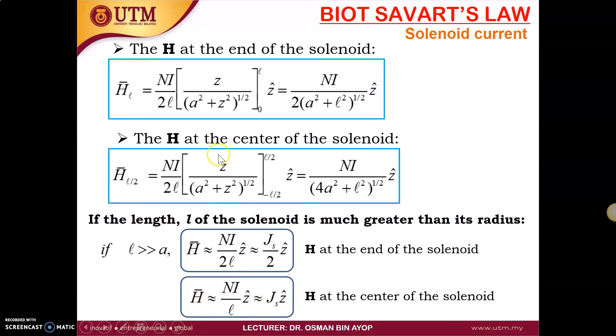At the center, H equal to Ni over l z, or js z. This is H at the center of the solenoid. As a conclusion, the H at the center is equal to js, and this one is js over 2. Basically, H_l is the H at the end, and this is the H at the center.